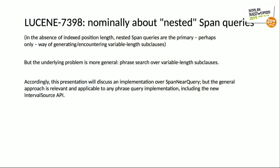Lucene 7398 is the issue that forms the umbrella for a lot of what I'm talking about here. The issue is nominally about nested span queries, but it's actually more general than that. In the absence of indexed position length, nested span queries are the primary and perhaps the only way of generating or encountering variable length sub clauses. So the issue we're really talking about is variable length sub clauses and phrase queries over those — proximity queries. The issues apply also to any phrase or proximity query implementation as well as to the interval source API.